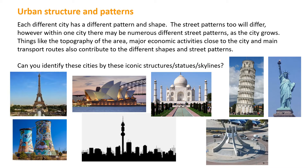Different cities have got different shapes and different patterns, and even the street patterns in the cities differ. There are three main street patterns we're going to look at in this lesson. But we need to take into consideration things like the topography of the area, major economic activities like mining close to the city — this would have an effect on the shape — and main transport routes. The city tends to expand out along main transport routes.